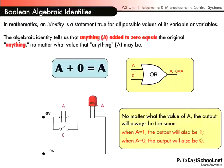No matter what the value of A, the output will always be the same. When A is a 1, the output will also be a 1, and when A is 0, the output will also be a 0. But the important thing here is to remember this identity. A ORed with 0 equals A. Notice I said ORed, and not added to.